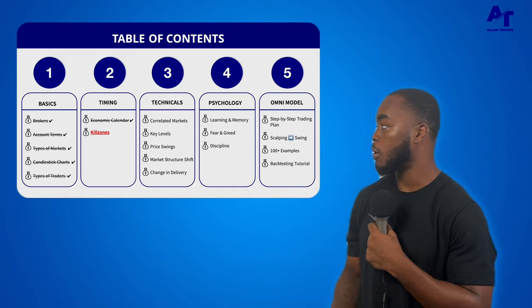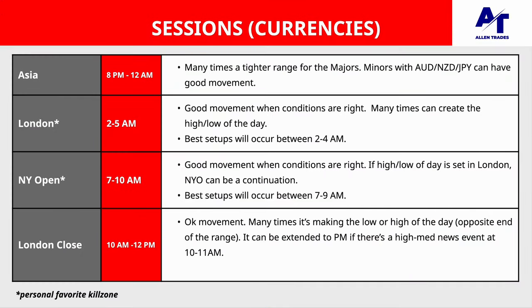Starting with currencies, the very first kill zone or session is the Asia range, which is from 8 PM to 12 AM. Many times this range is going to be tighter for the majors — remember the majors are pairs with the US dollar. However, the minors — pairs with the Australian dollar, New Zealand dollar, or Japanese yen — can have really good movement when the conditions are right, meaning if the market has not been in a tight consolidation or tight range for the last few days, weeks, or months.